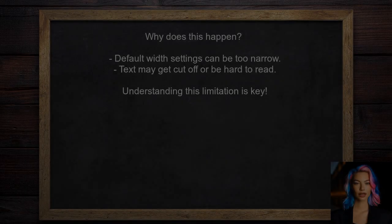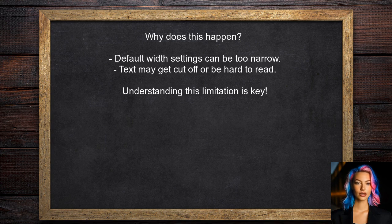So why does this happen? By default, Shiny Flex dashboard sets a standard width for tables, which can sometimes be too narrow for your content. This can lead to text being cut off or difficult to read. Understanding this limitation is the first step in finding a solution.